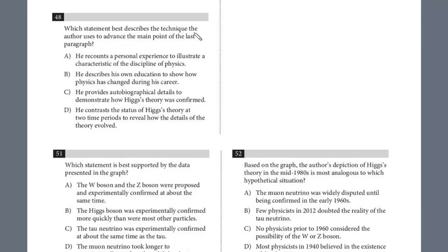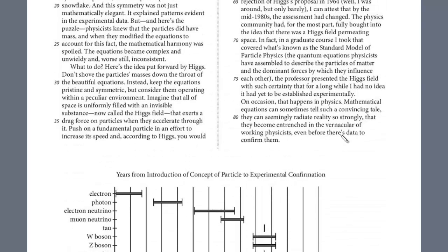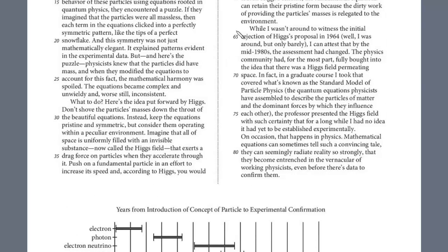Let's take a look at number 48. Which statement best describes the technique the author uses to advance the main point of the last paragraph? So we have some direction here. It's a specific question. We want to know what technique the author uses to advance the point of the last paragraph. So let's take a look. The last paragraph, it's here. While I wasn't around to witness the initial rejection of the Higgs proposal in 1964, well, I was around, but only barely.